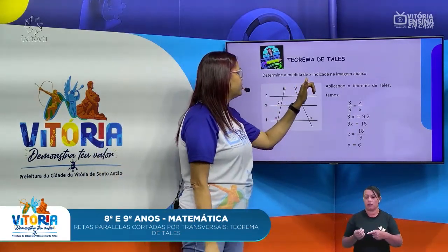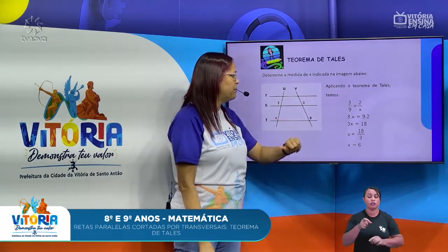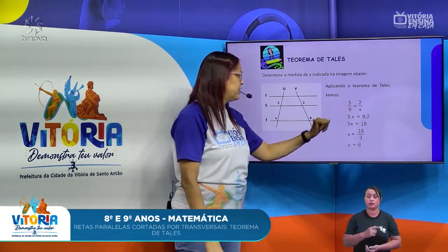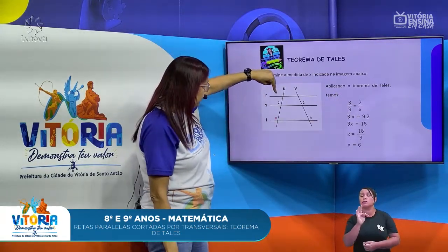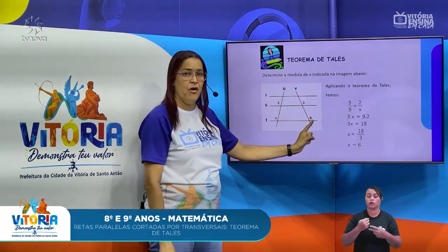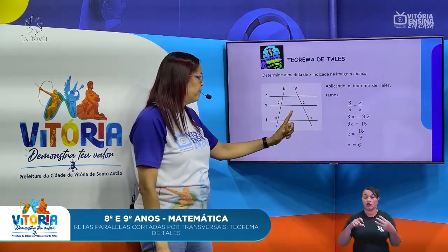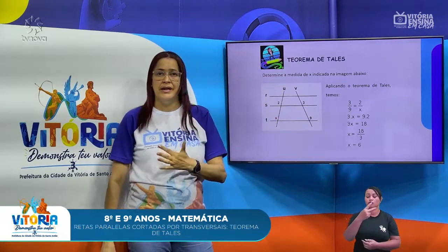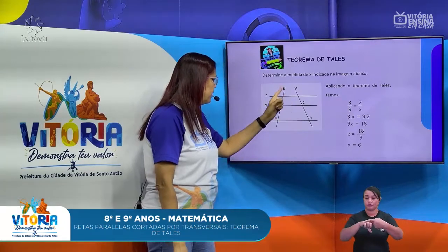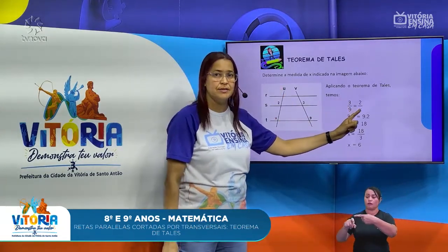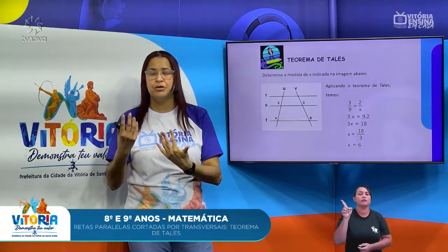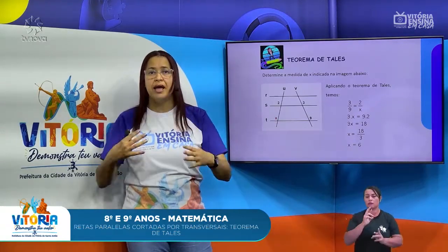Determine a medida de X indicada na imagem abaixo. Vamos a um exemplo para que a gente possa entender. Aplicando o Teorema de Thales, temos que 2 está para X, assim como 3 está para 9. O que é que eu vou fazer? Transformar na razão: 3 está para 9, igual a 2 que está para X. Então, meios pelos extremos — vou fazer a relação de regra de três.